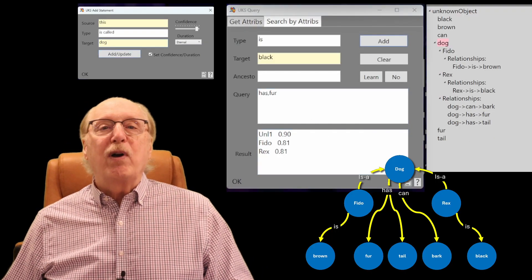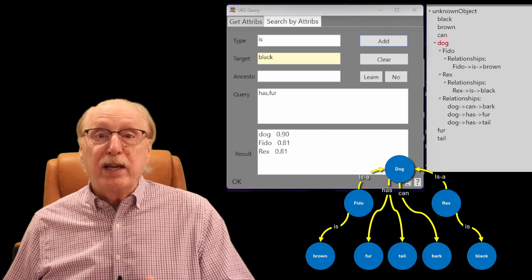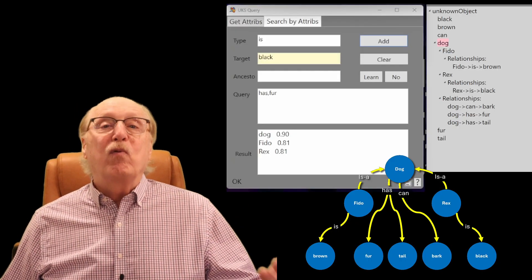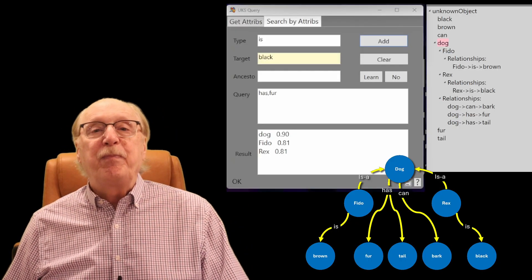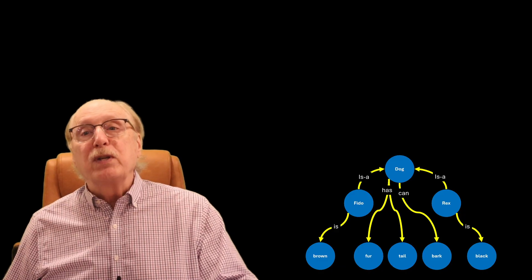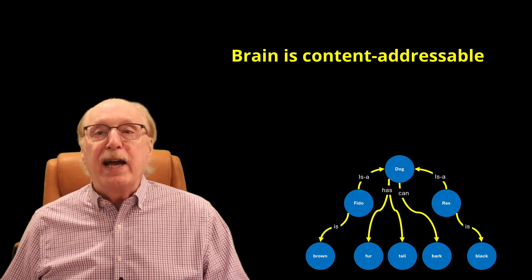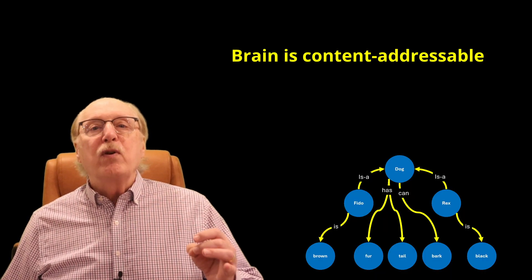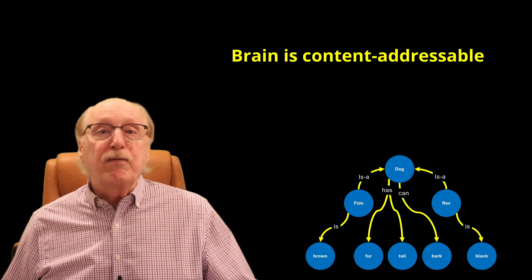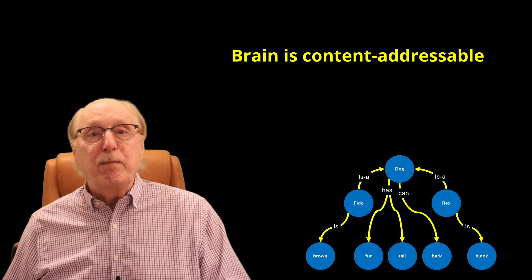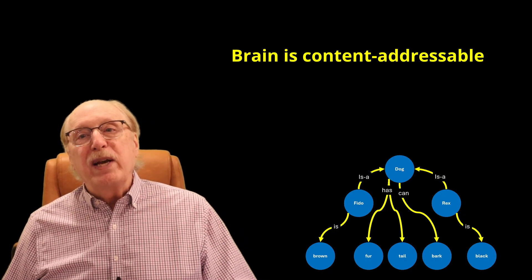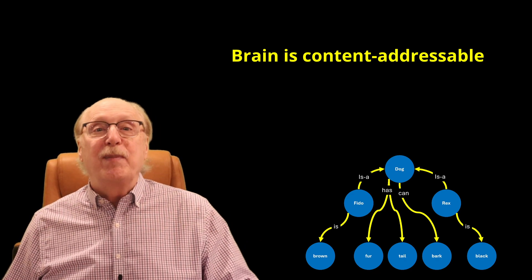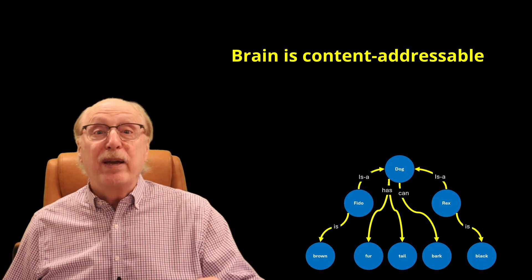The graph now contains a hierarchy. Dog has fur, a tail, and can bark. Fido is a dog and is brown. And Rex is a dog and is black. From here, important principles become visible. The brain can only access knowledge through attributes, through patterns of recognition. You can find dog by searching for barks and fur, and you can find Fido by adding brown to that search. Once your brain has added words like Fido, Rex, or dog, they also become attributes, and the brain can search on them as well.